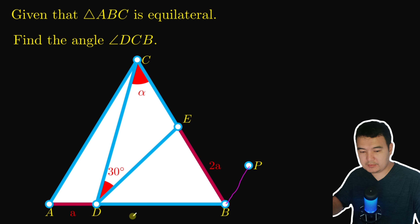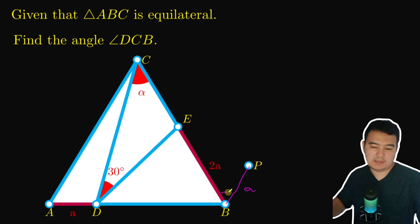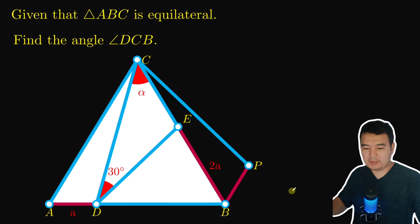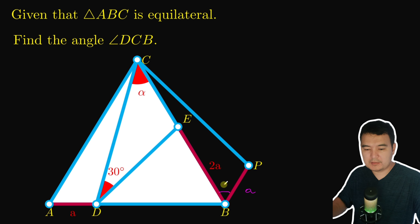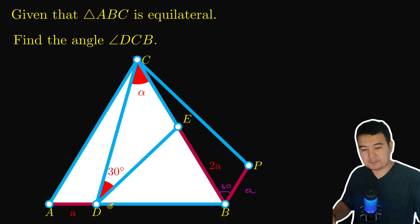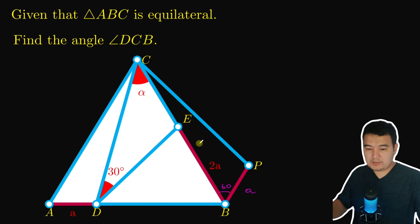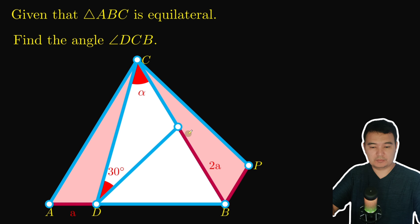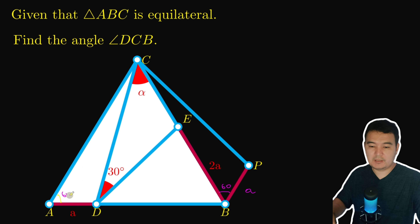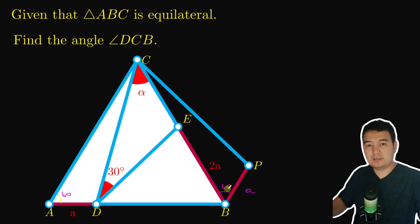I take a point P on the right side of the triangle such that BP equals AD, and make the angle 60 degrees. Connecting CP, we now have 60 degrees here. We can see that these two triangles are congruent because we have 60 degrees in both — this one was given as 60, and we set this one to 60.